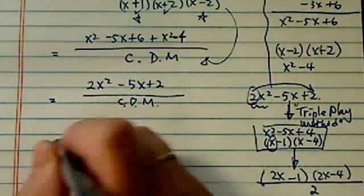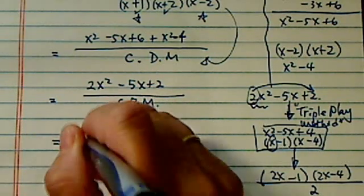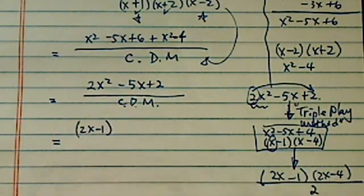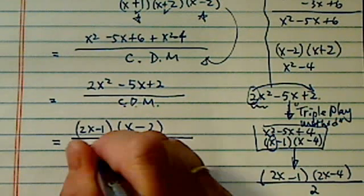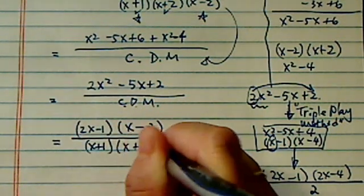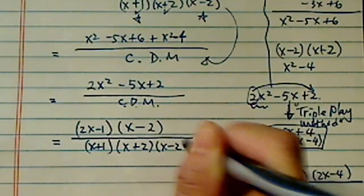Okay, so here, when I factor it, I'll have 2x minus 1 for one of them, and then x minus 2 for another one. Okay, and then I have x plus 1, let's put it back, x plus 2, and then x minus 2.